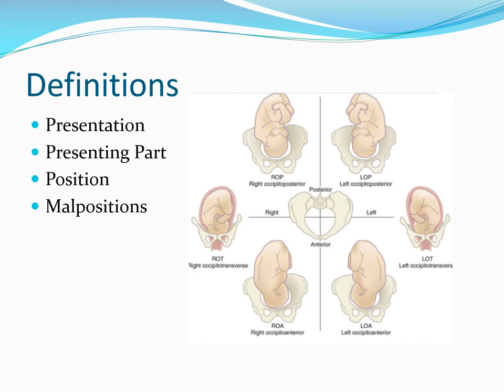Presenting part means that part of the presentation which is lying lowermost, and the first to engage, which can be felt per vagina. In the cephalic presentation, depending upon the attitude, we can have the vertex when the head is well flexed. If the head is extended, we get the face, and if it is only a deep flexed head, we get a brow presentation. Of these, only the vertex is a normal presentation, whereas brow and face are abnormal presentations.